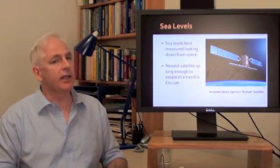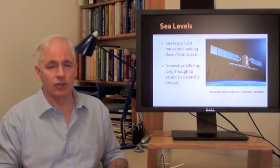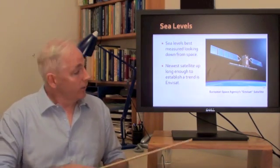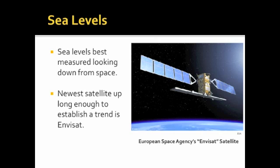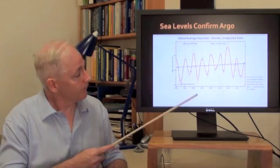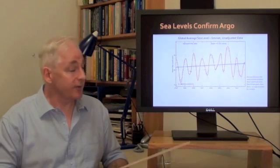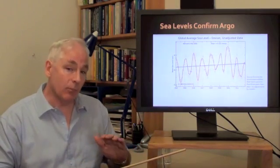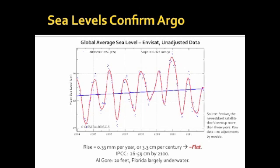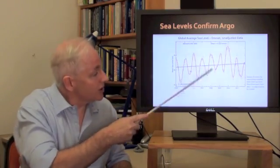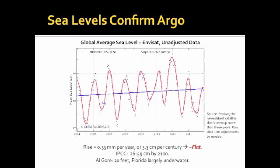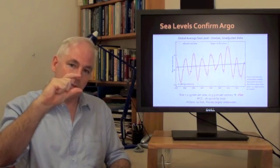Sea levels confirm this picture. Now, sea levels are best measured looking down from space. We can do it really accurately, and we can do it over the whole planet. This is Envisat. It's the newest satellite that's been up long enough to establish a trend, and it's from the European Space Agency. Envisat, since 2002, says the sea levels have been doing this. Now, these results are without any modelling adjustments. Normally, when sea levels are presented, they adjust them for various reasons due to models. These are the raw data, unadjusted. The blue spots are the actual readings. The red line is the seasonal variation you expect, and the blue line here is the rate of increase of the sea level worldwide. And that blue line is going up at around about a third of a millimetre per year, or about 3.3 centimetres per century.